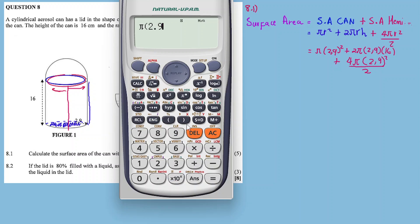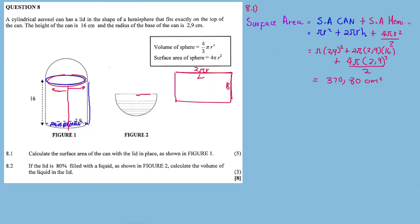Let us calculate: π(2.9)² + 2π(2.9)(16) + 4π(2.9)²/2. The answer is 370.90 cm². Now Question 8.2...